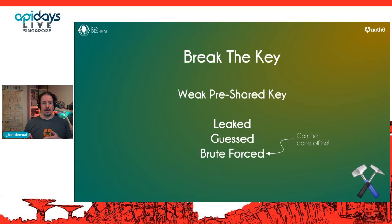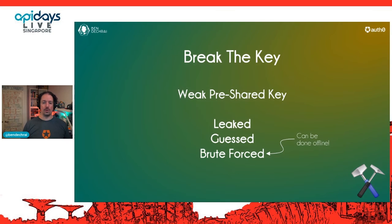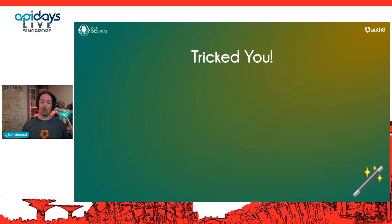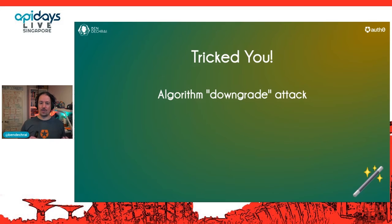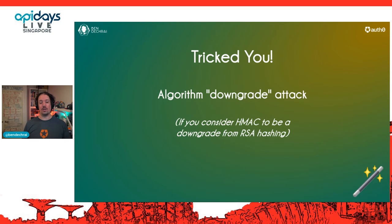The downside of asymmetric hashing algorithms — and why you might still consider using symmetric HMAC — is they take slightly longer to process. They're more CPU-intensive because they're doing public-private key work rather than just hashing with a secret. The fourth attack is where you get tricked — essentially like an algorithm downgrade attack. We're going to assume that HMAC is a downgrade from RSA hashing. Symmetric is less safe than asymmetric, and we'll actually use that as an attack vector on the token.